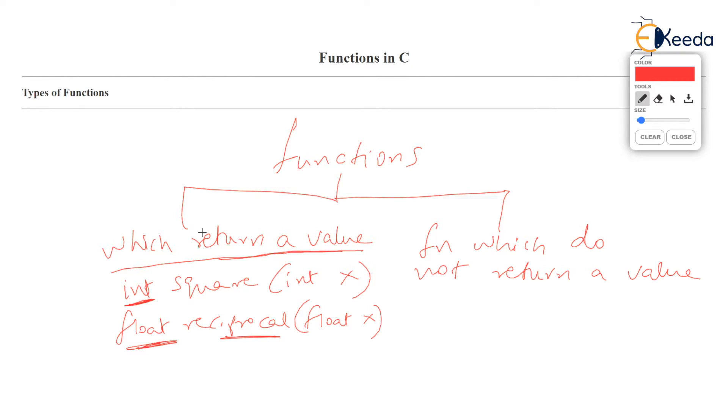But what if we write a function somewhat like this, void. Check this word, void. Let's say draw. Draw is the function. And let's say float r. R is the radius of the circle. And the function has been written. We won't go into intricacies of what function does. But what kind of function is draw?